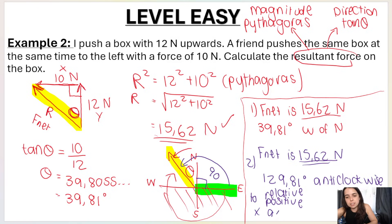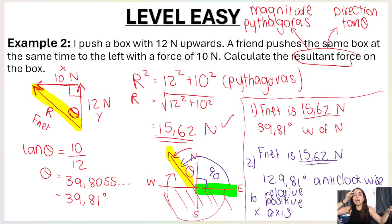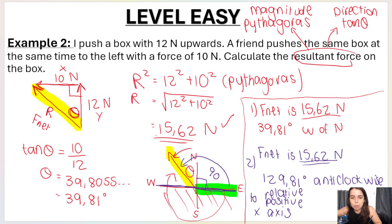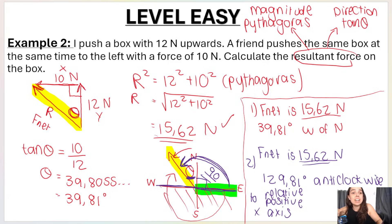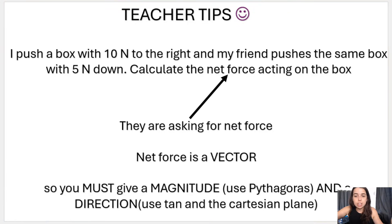That just means you start at the positive x-axis and move anti-clockwise until you reach your vector. I started at the positive x-axis, went anti-clockwise — not just 90°, but that little bit extra, which is 90° + 39.81° = 129.81°. You can go clockwise too; the angle will be different. It just depends on personal preference.